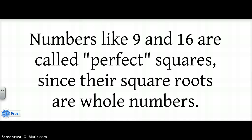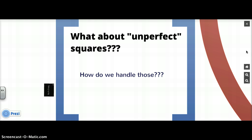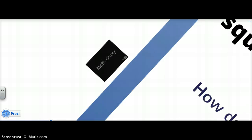Numbers like 9 and 16 are called perfect squares since their square roots are whole numbers. Another example would be 4, since it's 2 squared, and 25, that's 5 squared, et cetera. But what do we do when we talk about imperfect squares? That would be like 35, because the square root of 35 isn't a simple whole number.